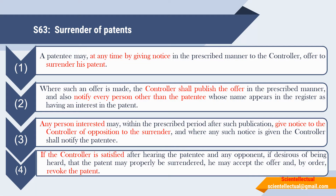Section 63, Surrender of Patents. Subsection 1: A patentee may at any time, by giving notice in the prescribed manner to the controller, offer to surrender his patent. That is, a patent holder may at any time give notice to the controller in the prescribed form that he wants to surrender his patent.